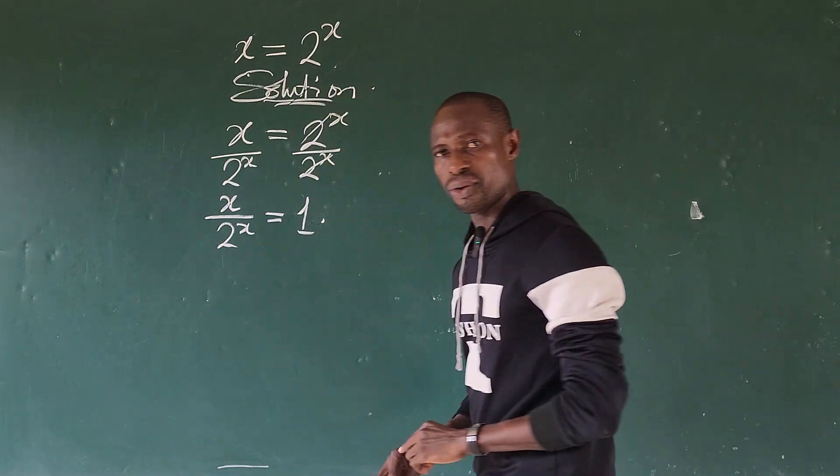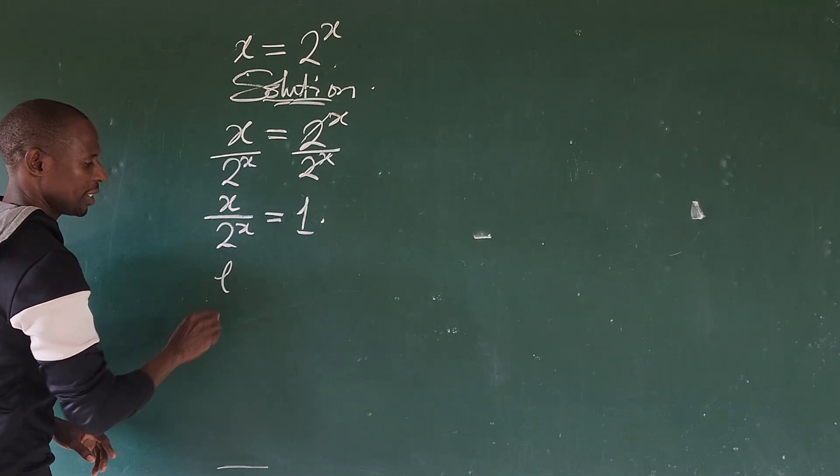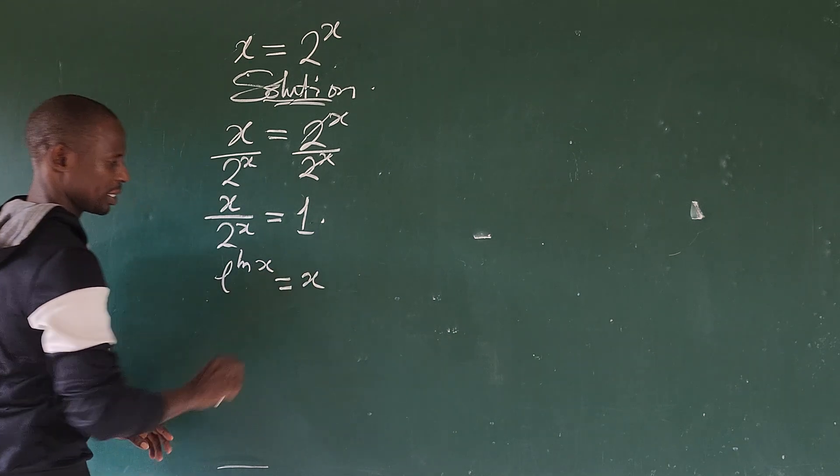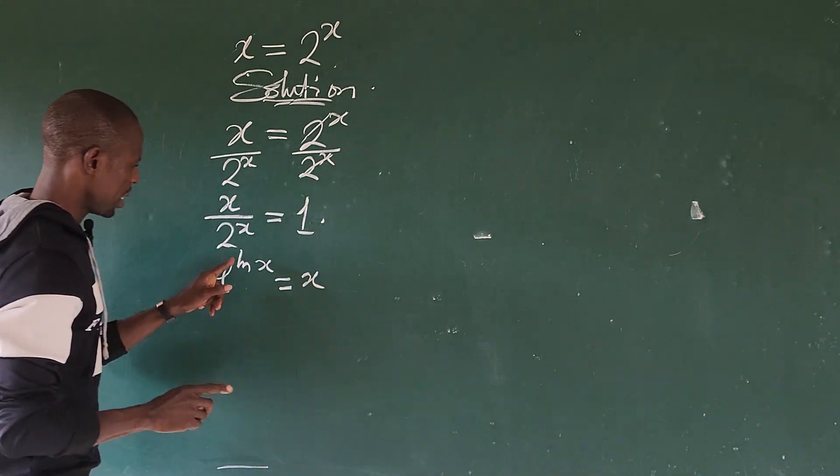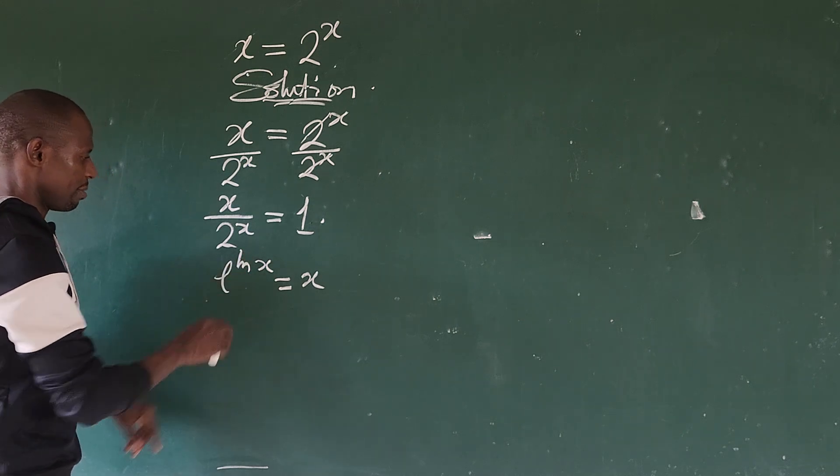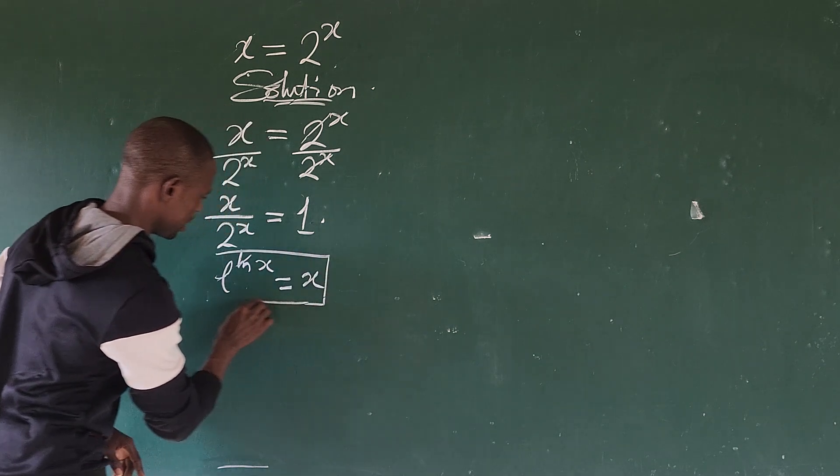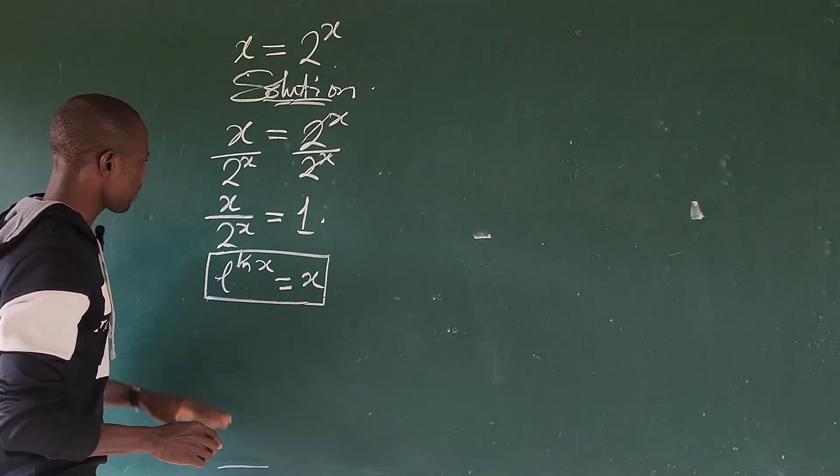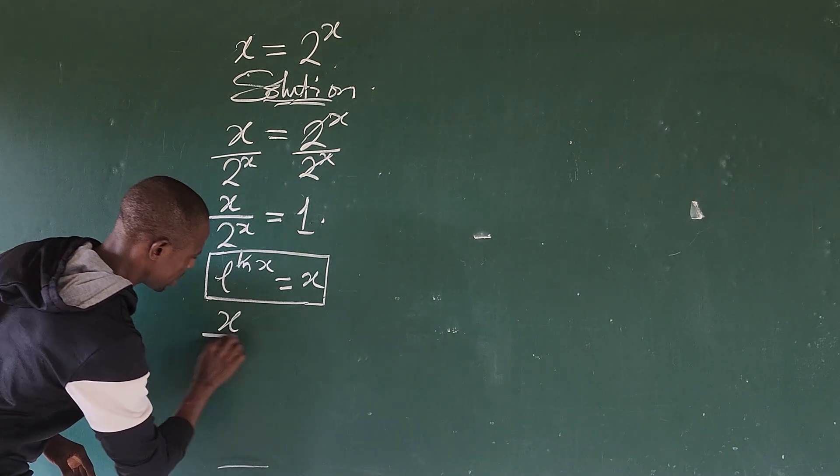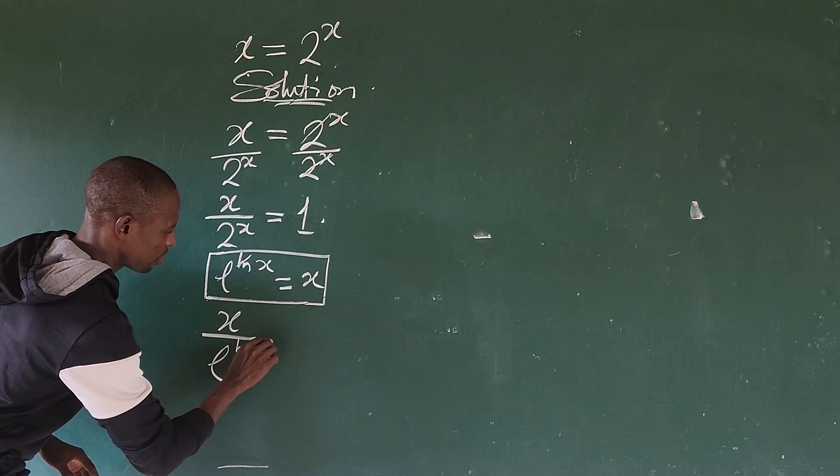What is the next thing we do here? I want to rewrite this denominator. Remember, if we have something of this kind, we have e to the power of ln of x, this will give us x. Why? Because this is ln base e, and so this e will cancel. If we look at this identity, then I can rewrite the denominator. This will now give us x over e to the power of ln of 2 to the power of x.